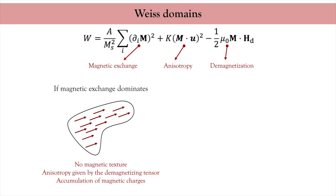As we have seen previously, the dipolar energy can be modeled by a constant demagnetizing tensor. On the downside, this homogeneous magnetic distribution accumulates magnetic charges on opposite edges of the sample, creating a strong demagnetizing field.